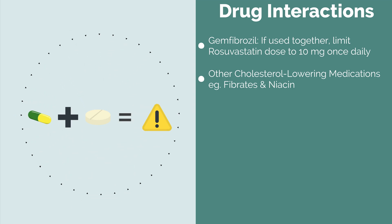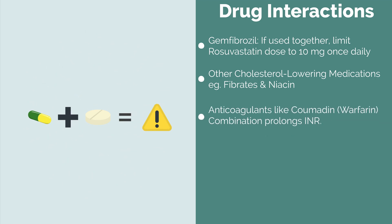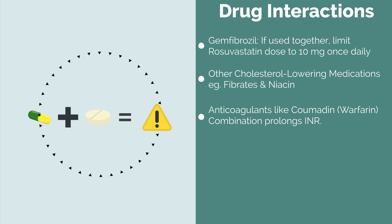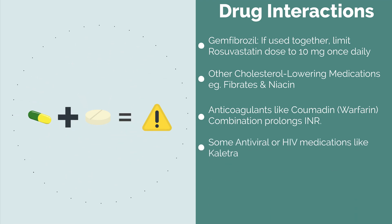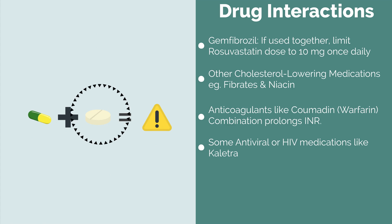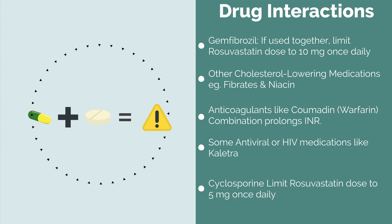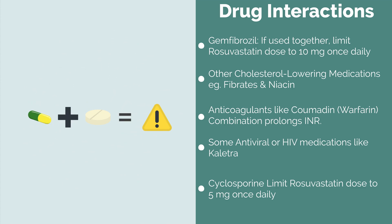Another potential drug interaction is with anticoagulants or blood thinners like Coumadin. When Coumadin is taken with Rosuvastatin, it tends to prolong the INR, which may mean it takes longer for your blood to clot, making you more prone to bleeding. As a result, monitoring is highly recommended when you start Rosuvastatin or when there is a dose change. Some antiviral or HIV medications — for example, Kaletra — have also been known to increase Rosuvastatin exposure, increasing your risk of side effects, as well as cyclosporine. With cyclosporine, the recommendation is to limit Rosuvastatin to 5 milligrams once daily.